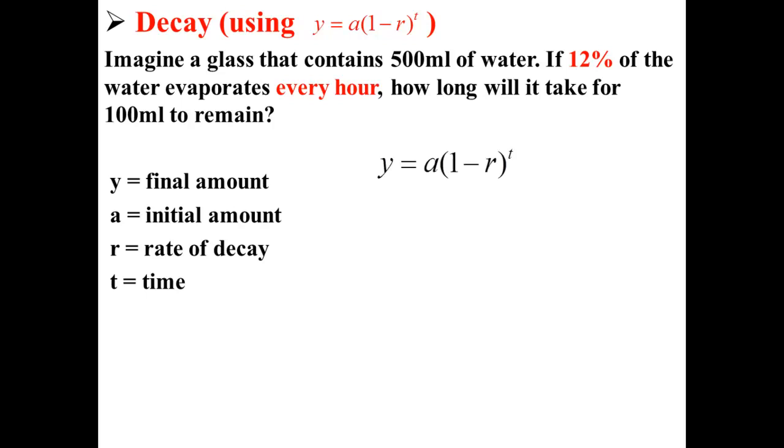So we'll use this equation and plug in our values. Here 500 is the initial amount, 100 is the final amount, 0.12 or 12% is the rate of decay, and t is the time we're trying to solve for.